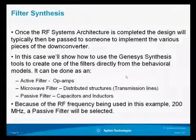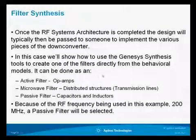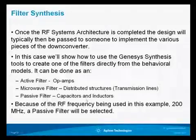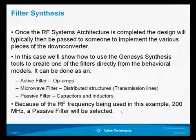Once the RF architecture is completed, the designs will typically be passed to someone to implement the various pieces of the down converter. We'll show how to use Genesis synthesis to create one of the filters directly from a behavioral model. It can be done either as an op-amp, a distributed structure, or with capacitors and inductors as an LC filter. Because the RF frequency is at 200 megahertz, we're going to use a passive RF filter.